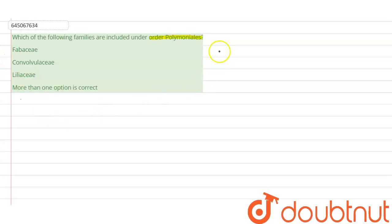Look, order is the group of similar kinds of families.